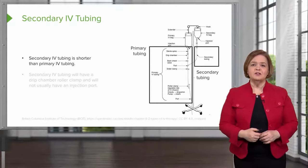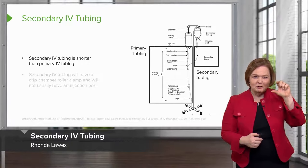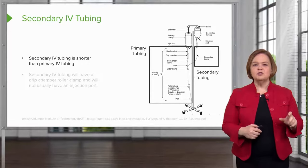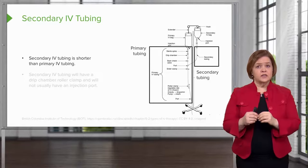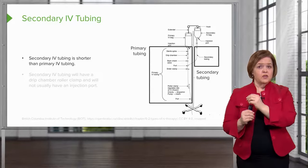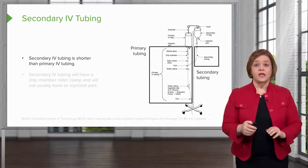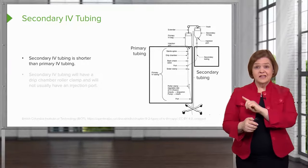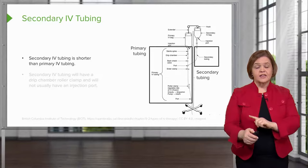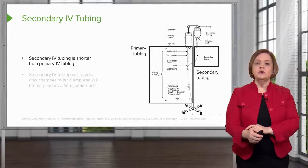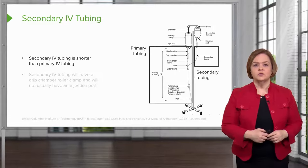Now, secondary tubing is the shorter one. Secondary tubing is shorter than primary tubing because it's just going to connect right from the pole to the top of the IV tubing — it doesn't go all the way down to the patient. The medication in that secondary fluid is going to go through the primary line and enter the patient, but we don't have to connect the secondary tubing directly to the patient, which is why it can be shorter.